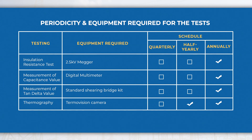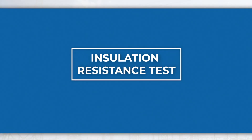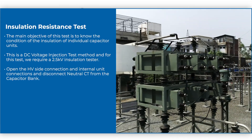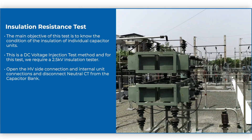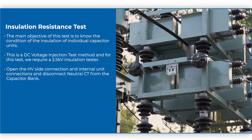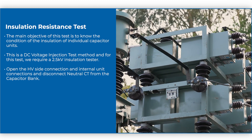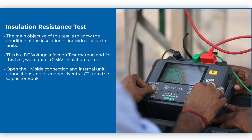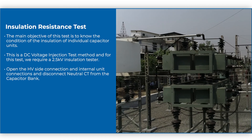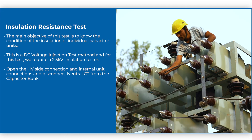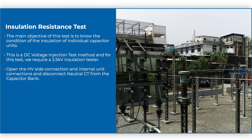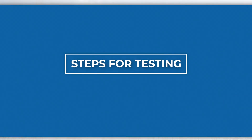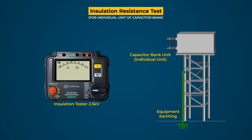Testing of capacitor bank: as per the maintenance schedule, these tests shall be carried out at regular intervals as mentioned in the table. Insulation resistance test: the main objective of this test is to know the condition of the insulation of individual capacitor units. This is a DC voltage injection test method and requires a 2.5 kV insulation tester. Open the HV side connections, internal unit connections, and disconnect the neutral CT from the capacitor bank.